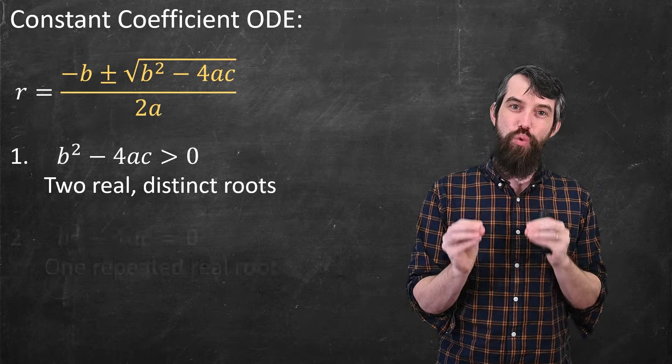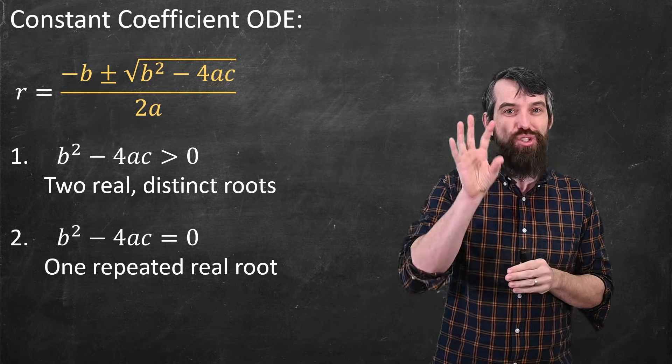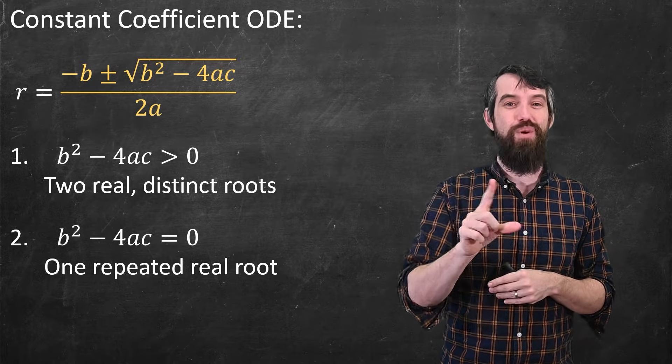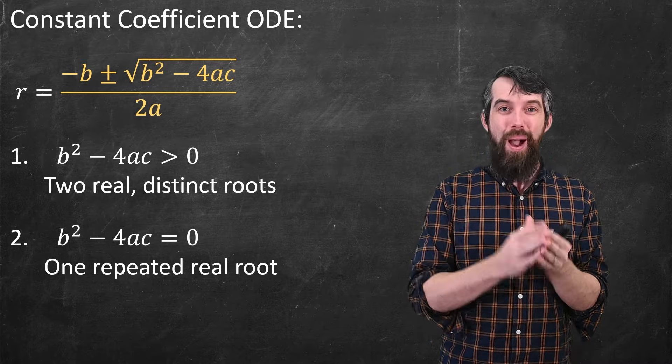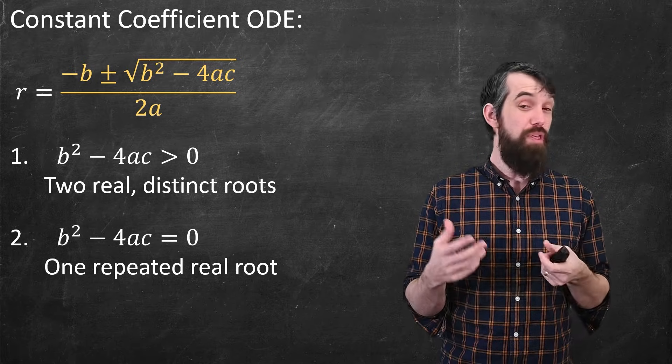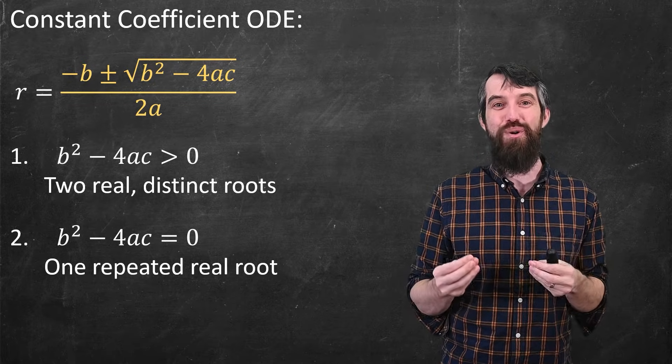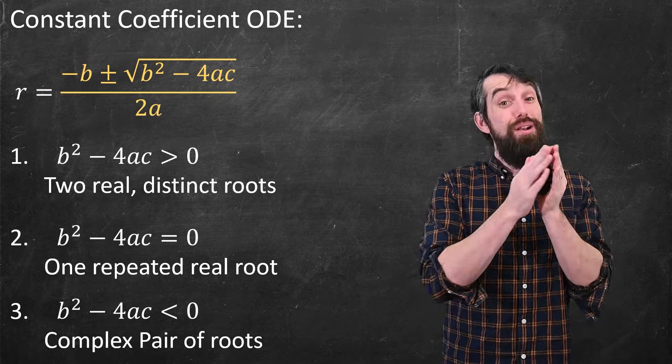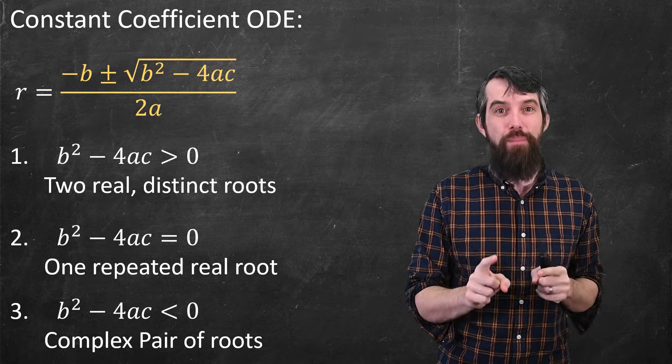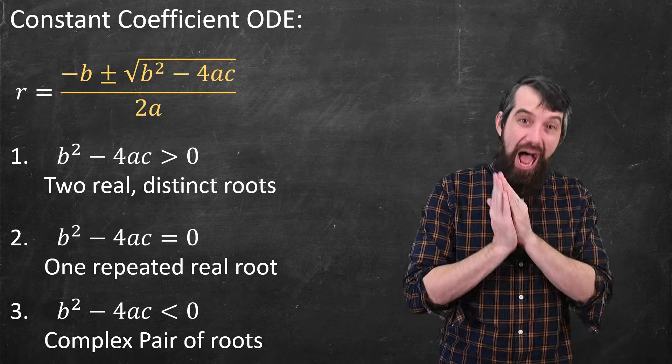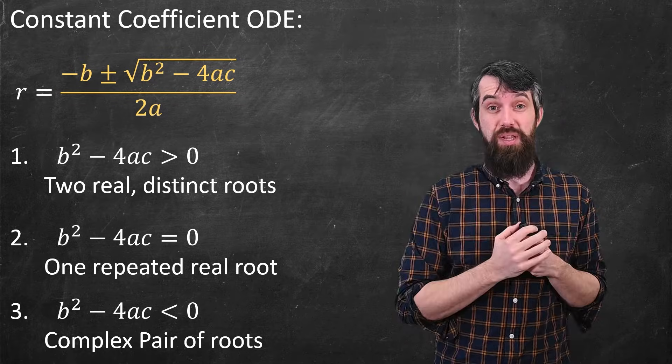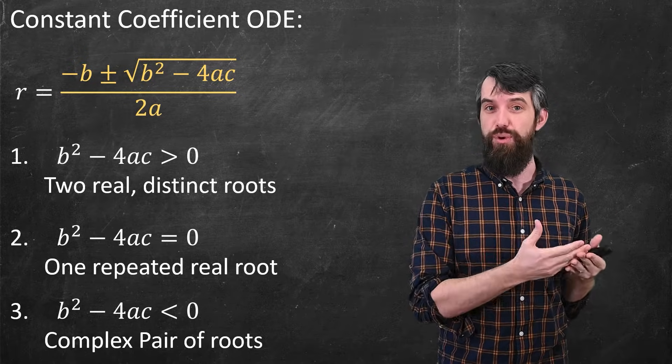If the portion under the square root was zero, you'd be like minus b plus or minus zero. That wouldn't give you two solutions, only one solution that we call repeated. It'd be the same root, r minus that root squared, repeated. The third possibility is if b squared minus 4ac is less than zero, if it's negative, you'd have square root of a negative value. This is a complex pair, plus or minus i times something. So these are three possibilities. For each, what does the general solution to the original differential equation look like?